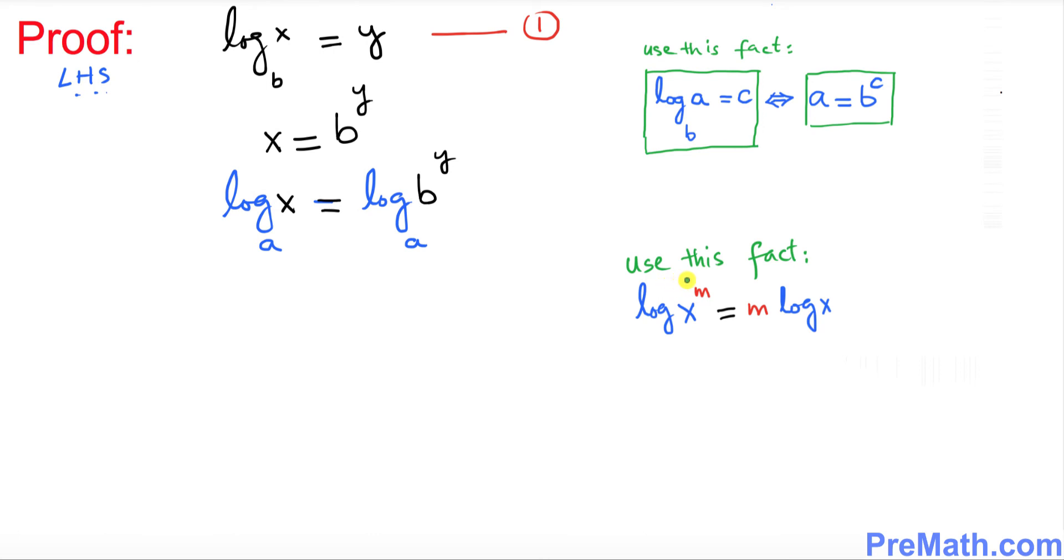Now next we will be using this fact: if you have a log of x and you have an exponent m, then you can move this exponent to the front. Likewise, I'm gonna do this thing - this is our exponent over here. I can move it to the front, so I can write as log of x with a base a equal to y times log of b with a base a.